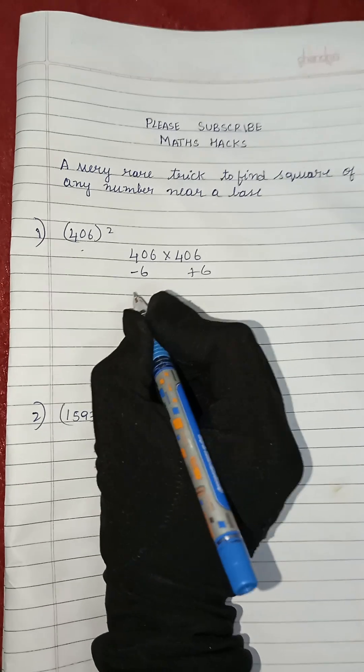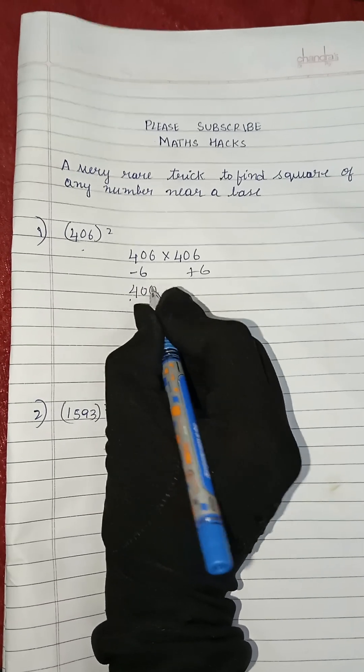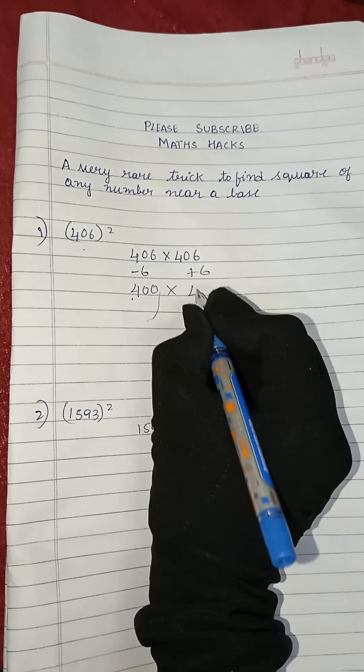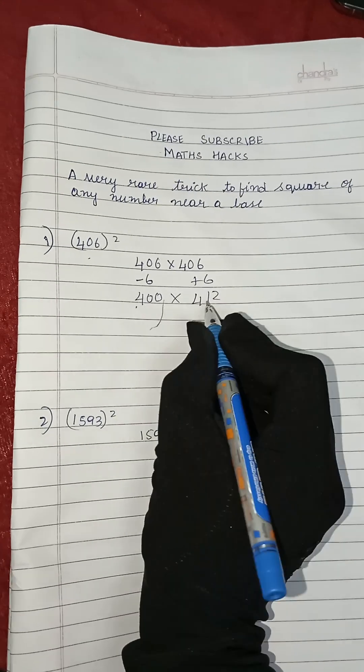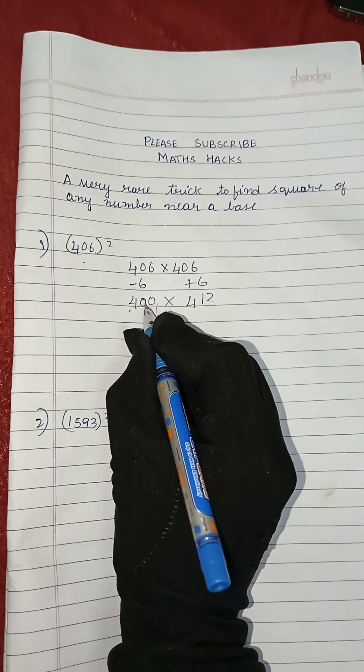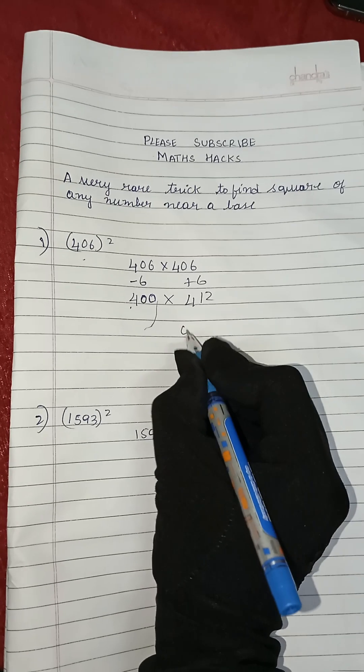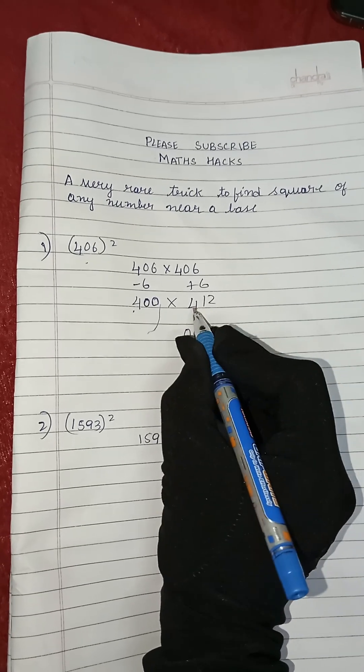406 minus 6 gives you 400 into 406 plus 6 gives you 412. Now we'll do the multiplication here. We got two zeros here, so first we will write two zeros in the end.